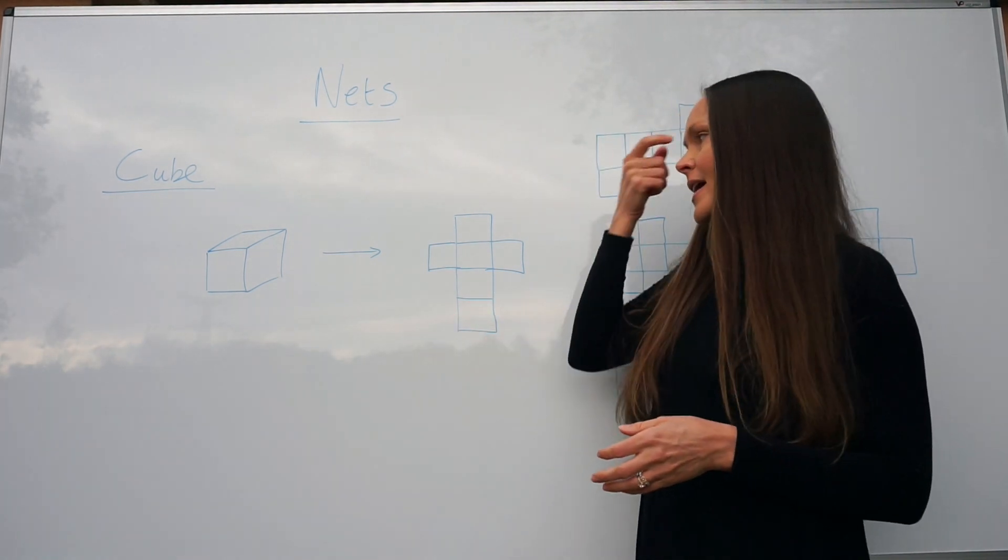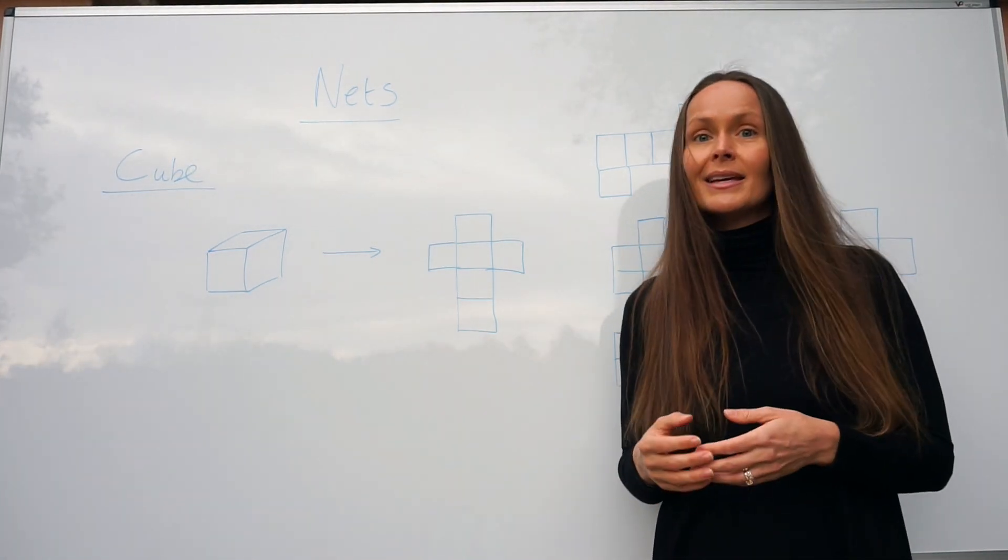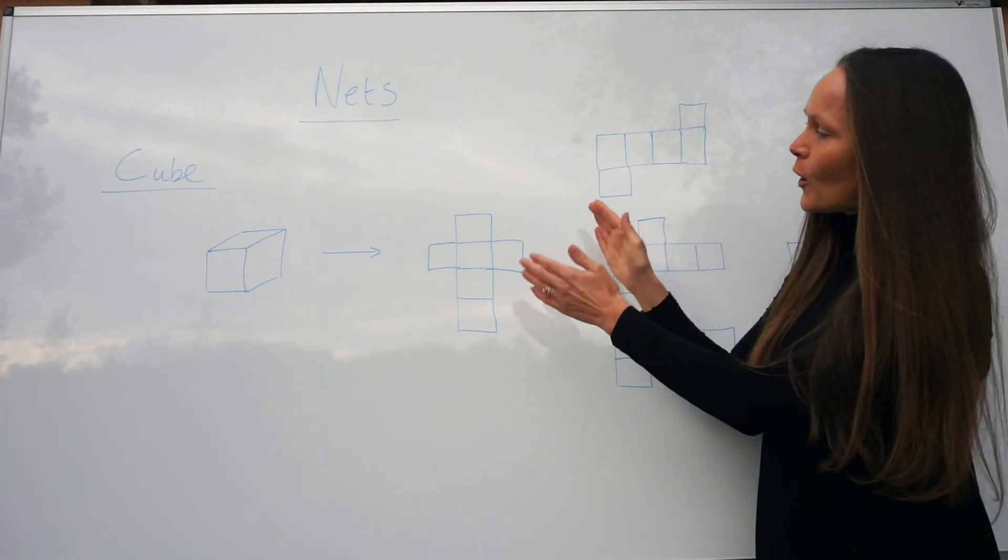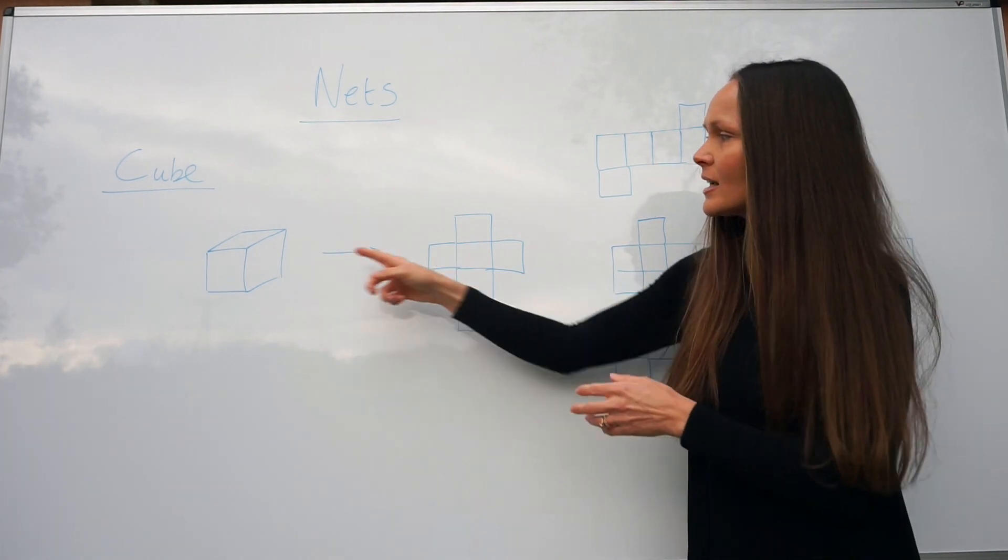Here there are some other nets, because you can draw a net of a shape in several ways. Hopefully you can see when you fold all the faces of a cube here back together, it creates the shape that you started with.